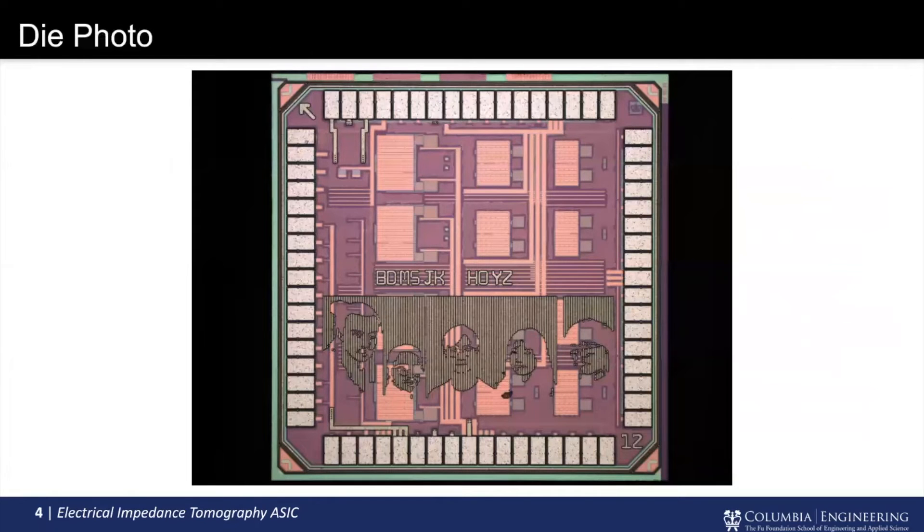So this is the die photo of our chip. It matches pretty well with the block diagram. So you can see the four discrete channels in the center. Each one of them has the first stage, which is the LNA, then the two-stage PGA. And then the top left-hand corner is the current stimulator. And then along the whole left-hand side is the switching circuit.